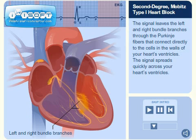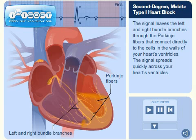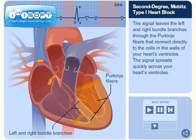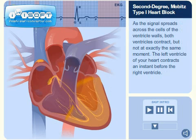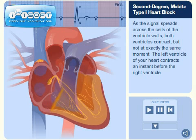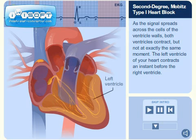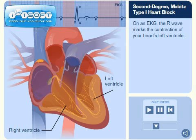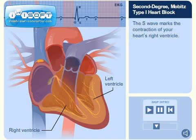The signal leaves the left and right bundle branches through the Purkinje fibers that connect directly to the cells in the walls of your heart's ventricles. The signal spreads quickly across your heart's ventricles. As the signal spreads across the cells of the ventricle walls, both ventricles contract, but not at exactly the same moment. The left ventricle contracts an instant before the right ventricle. On an EKG, the R wave marks the contraction of your heart's left ventricle and the S wave marks the contraction of your heart's right ventricle.